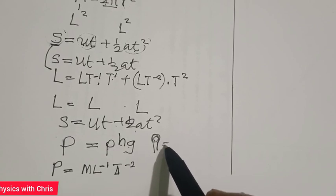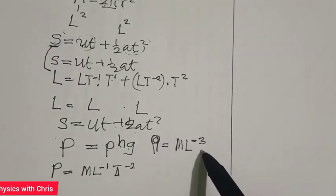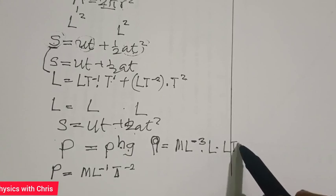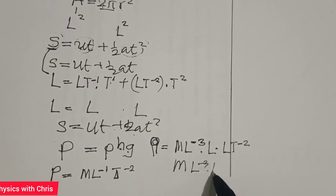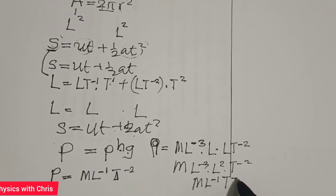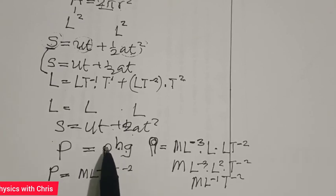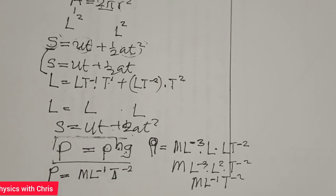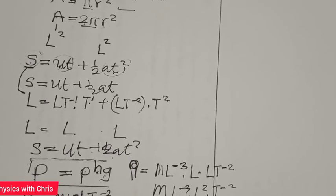The dimension of density is ML⁻³, multiplied by the dimension of height L, multiplied by the dimension of acceleration due to gravity LT⁻². When simplified, ML⁻³ × L × L gives ML⁻¹T⁻². This is the same as the dimension of pressure, so we confirm and conclude that this equation is dimensionally correct. That's one application of dimensional analysis.